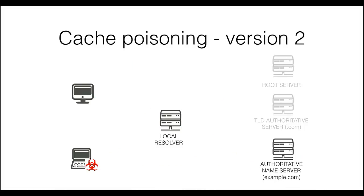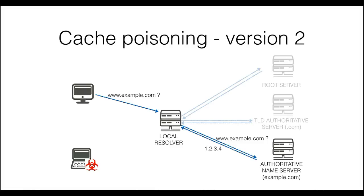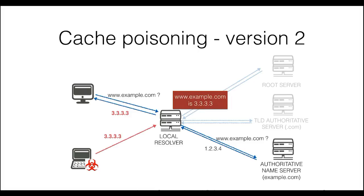Let's now see another way of implementing a cache poisoning attack. Let's assume that a legitimate host issues a query for example.com. Eventually, the local resolver will receive a reply from the authoritative name server for example.com. As we know, this answer will be cached by the local resolver for possible later use. Now assume that an attacker succeeds in forging a fake DNS reply for example.com. If the local resolver fully accepts the answer, it will cache the malicious mapping. This is another instance of cache poisoning.